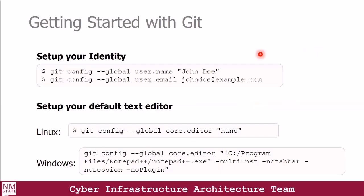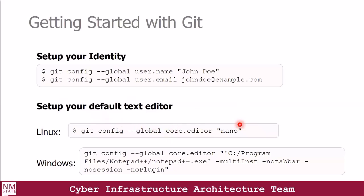When you're done downloading and installing Git, the next thing you want to do is to set up your identity with this command. You set up your name and your email address, and this ensures that every change you make in a file appends your name to it so that people can know who effected a given change at a given time. You can also set up your default text editor so that whenever you want to commit a message to a code, Git is going to use that editor by default.